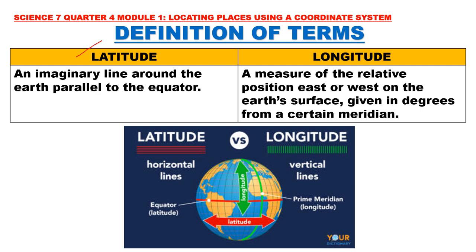Latitude is an imaginary line around the Earth parallel to the equator. Longitude is a measure of the relative position east or west on the Earth's surface given in degrees from a certain meridian. Latitude lines are the horizontal lines in your globe or world map. Longitude lines are the vertical lines found in your globe or world map. Latitude lines are parallel to the equator, while longitude is parallel to the prime meridian.